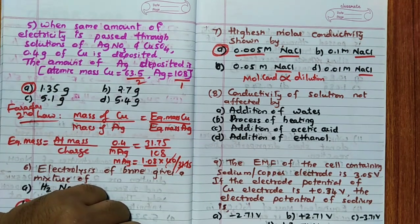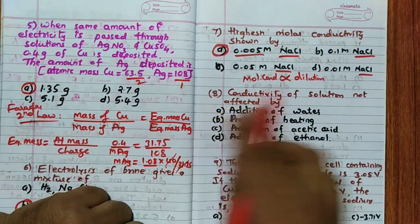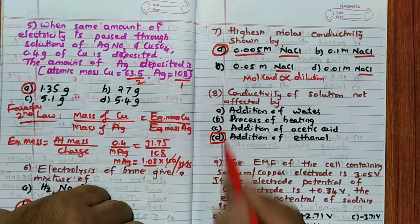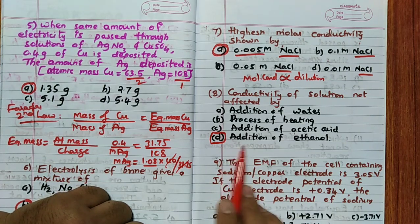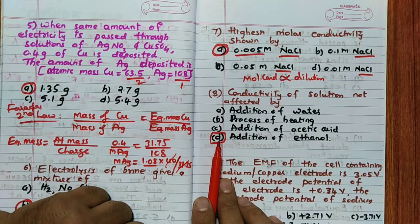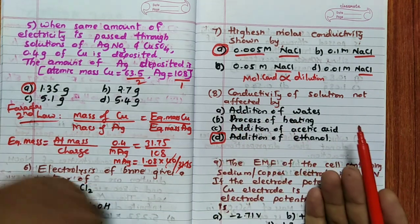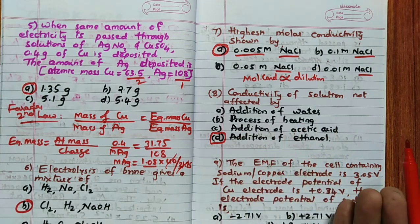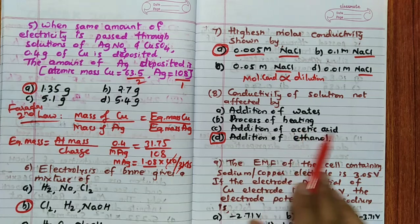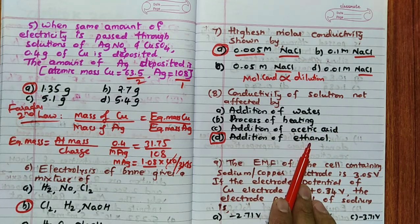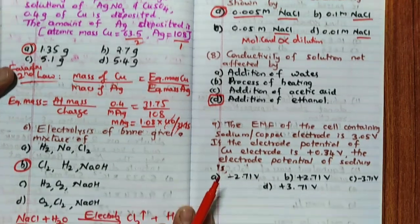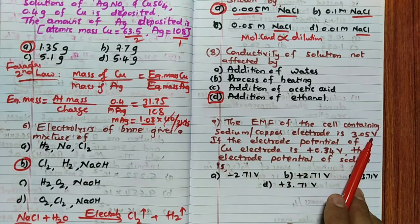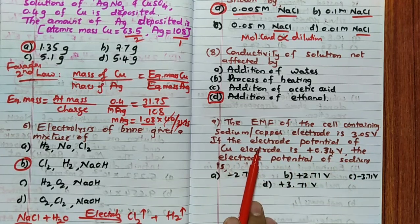The eighth question: conductivity of a solution is NOT affected by which addition? Adding water increases conductivity by increasing dissociation. Heating increases ion formation. Adding acetic acid also affects it. However, ethanol is an organic solvent and does not increase ionic dissociation, so conductivity is not affected by the addition of ethanol. The answer is option D.